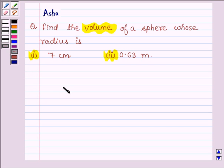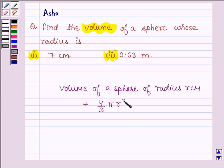First, let us learn the formula to calculate the volume of a sphere of radius r cm. This is equal to 4 upon 3 pi r cube cm cube. With the help of this formula, we are going to solve the above problem. So, this is our key idea.